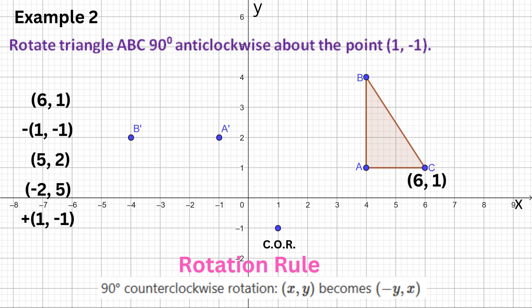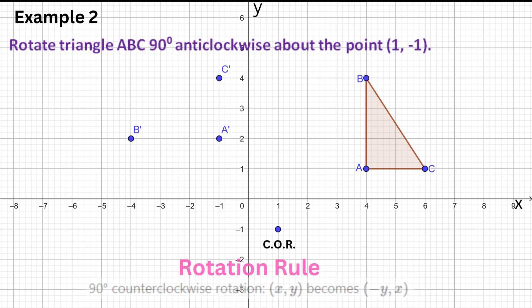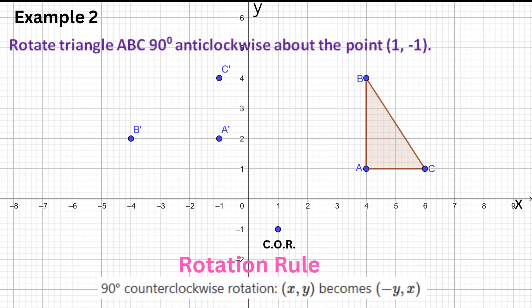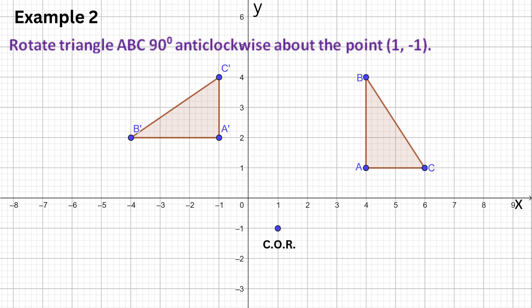The final step is to add back the center of the rotation. So −2 + 1 = −1, and 5 + (−1) = 4. So the newly rotated image point of C is (−1, 4). Connect the image points, and we have our newly rotated image triangle.